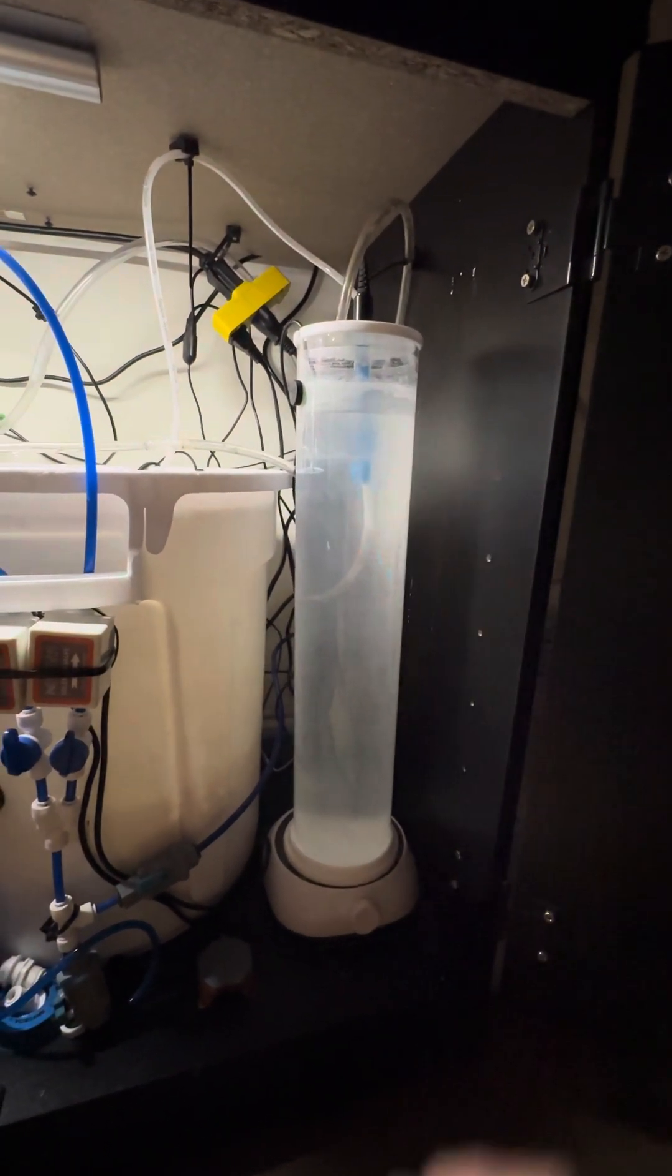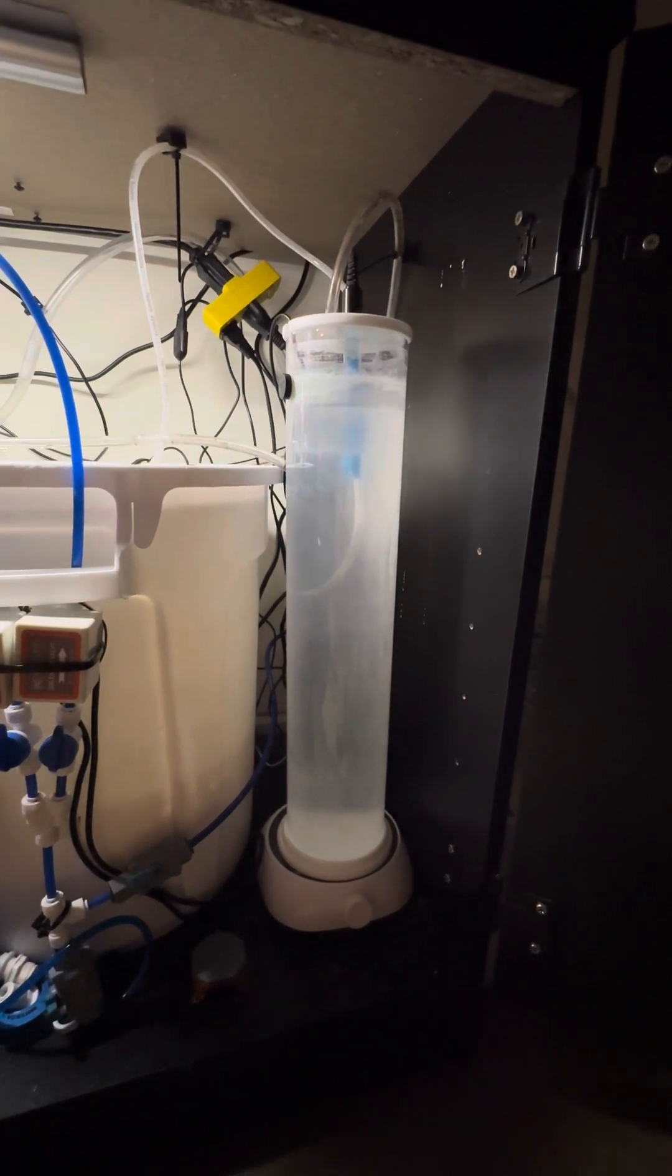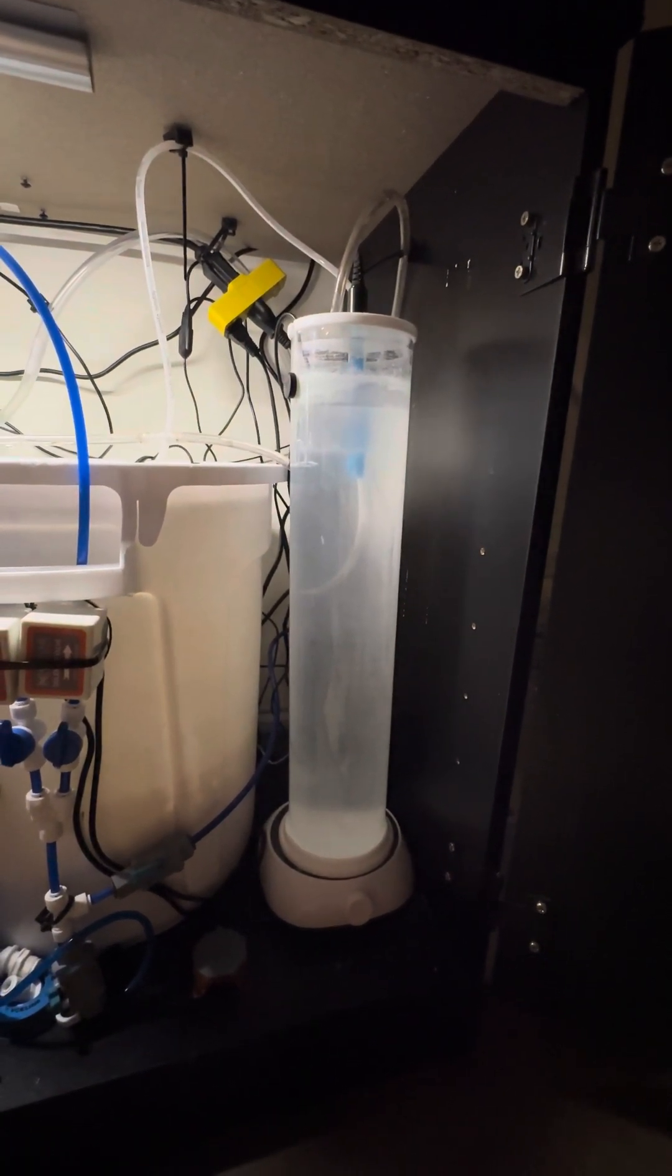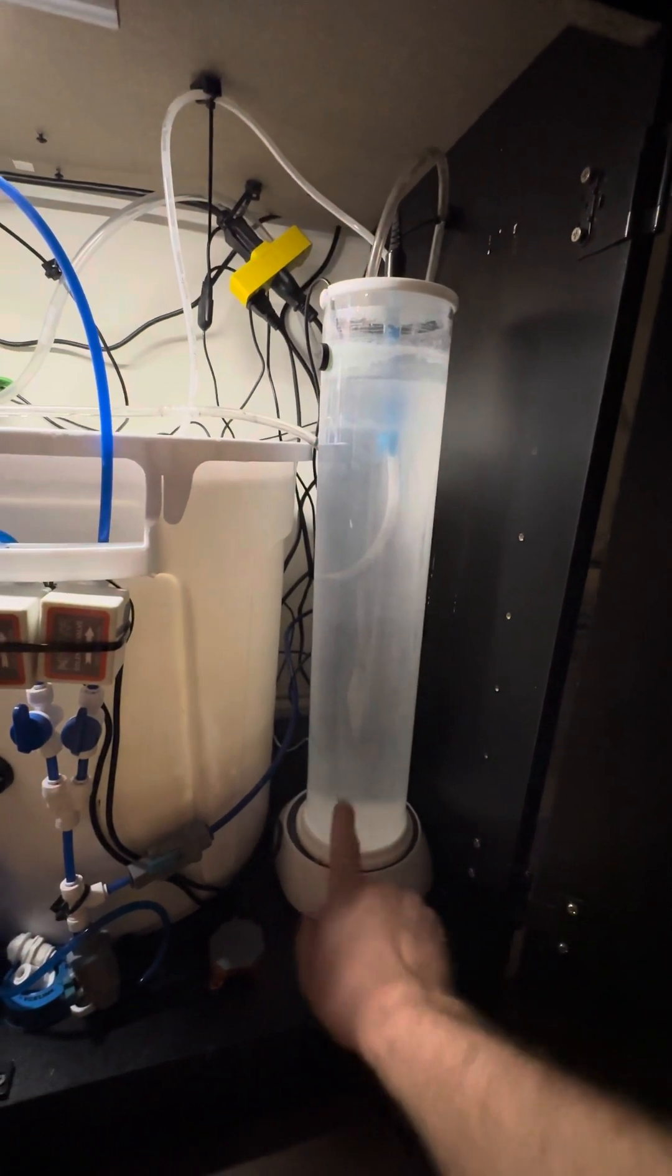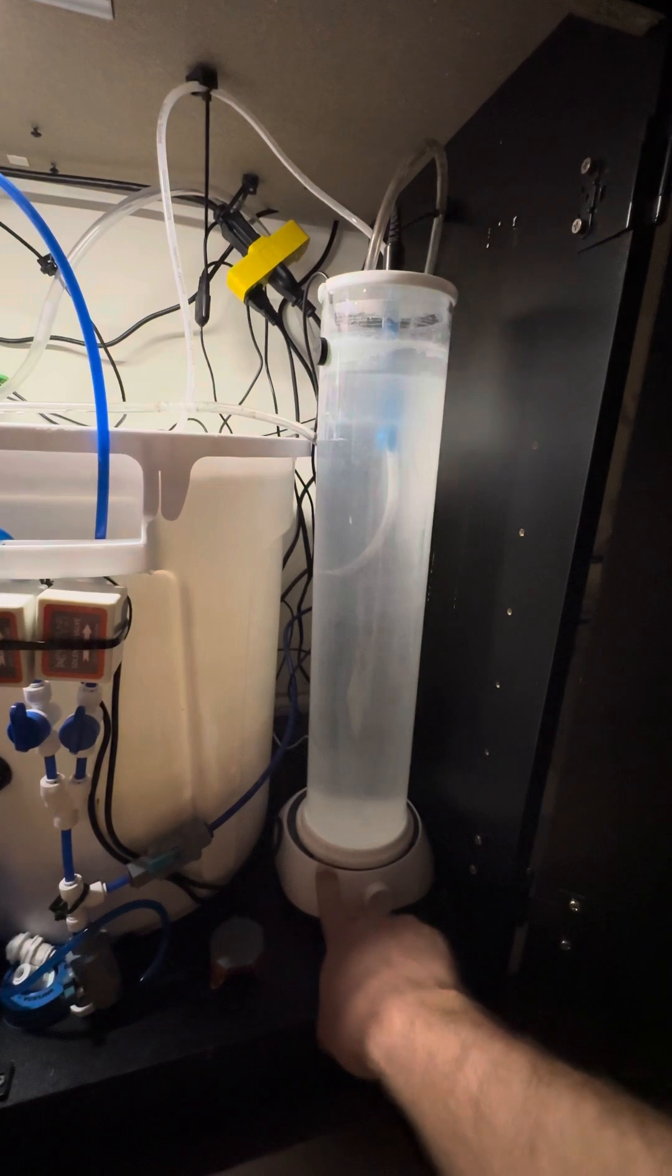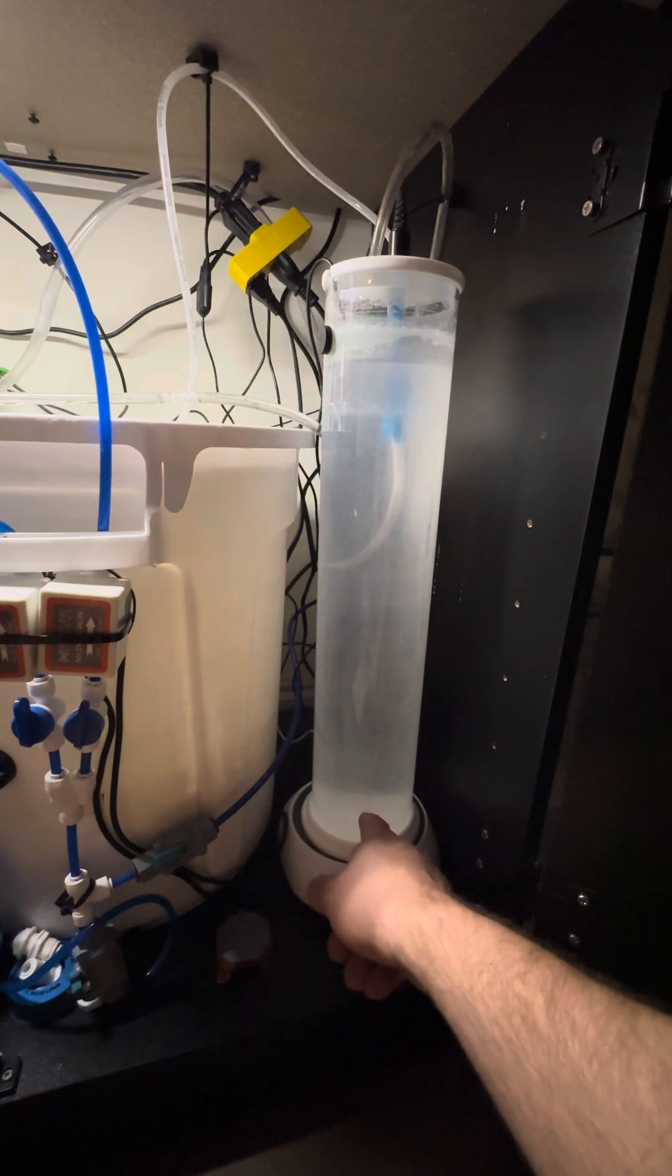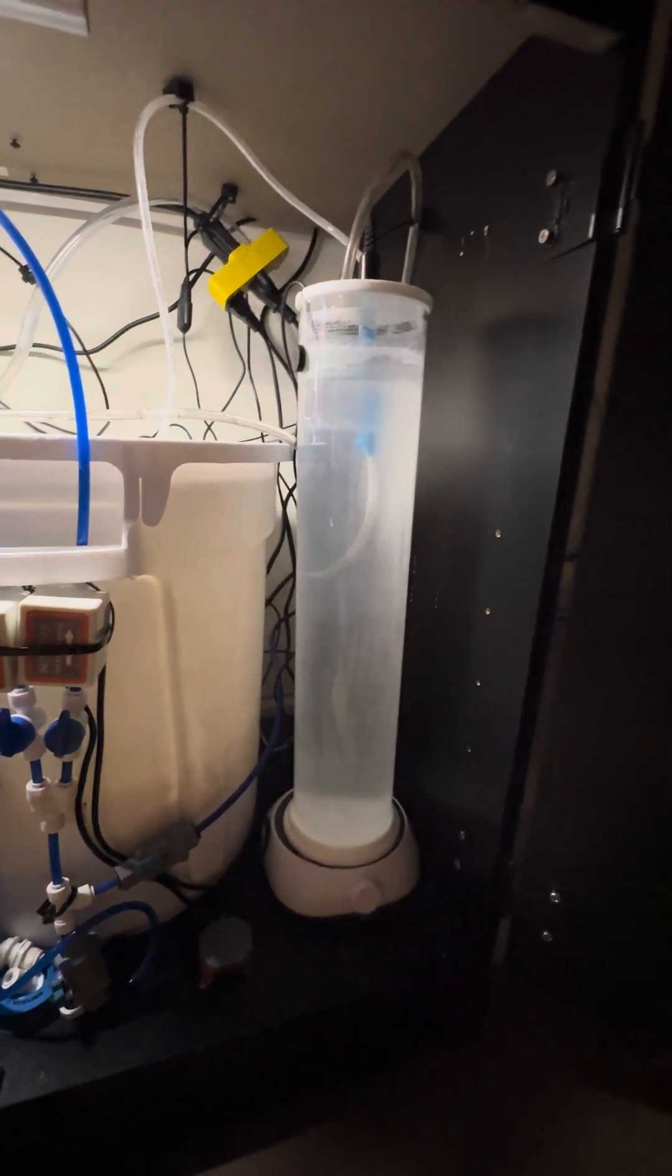We have a chamber, Aquamax DC-2, 3 liter container that you can get on bulk reef supply for like $45, a $39 Amazon magnetic stirrer that stirs a little magnetic pill down here at the bottom. This is the Kalkwasser.